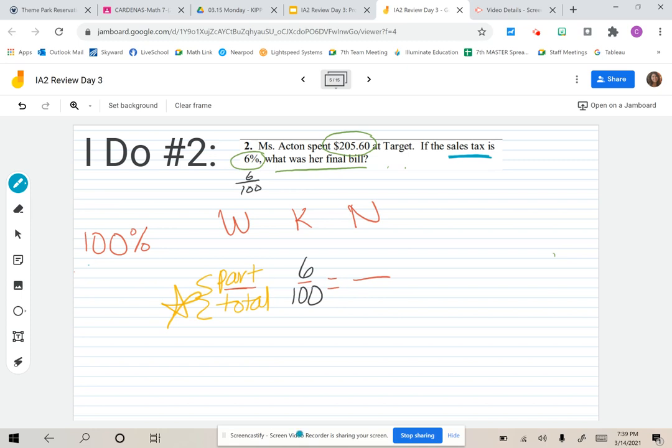When we have an amount before tax, we call that the subtotal. In this case, the subtotal is $205.60. When we look at a receipt, we add the tax, which is something we're missing, to get the final total.